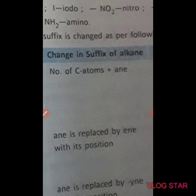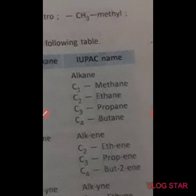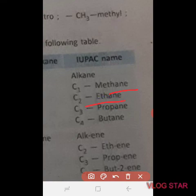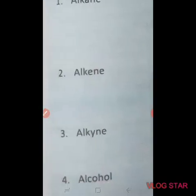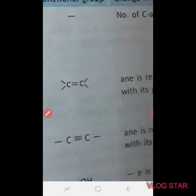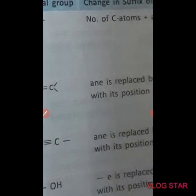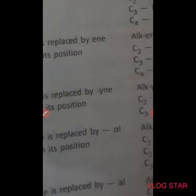In the homologous series, alkanes have a carbon-carbon single bond, with the general formula CnH2n+2. C1 is methane, C2 is ethane, C3 is propane, C4 is butane. For alkenes, which have a carbon-carbon double bond (C=C), C2 is ethene, C3 is propene, C4 is butene, and so on.